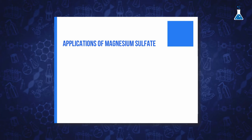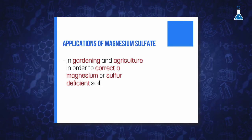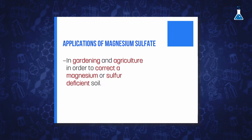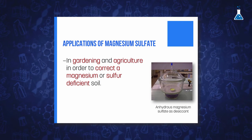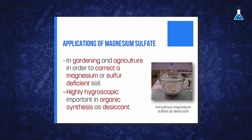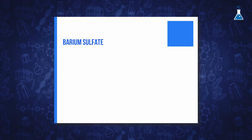Magnesium sulfate also has important applications in gardening and agriculture in order to correct magnesium or sulfur deficient soil. The high solubility of this compound makes it a better choice than other magnesium soil amendments. In addition, because anhydrous magnesium sulfate is highly hygroscopic, it has an important application in organic synthesis as a desiccant.